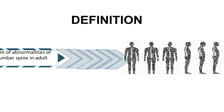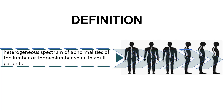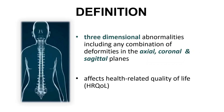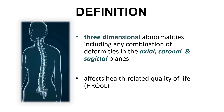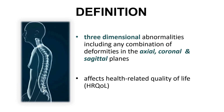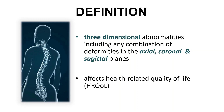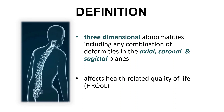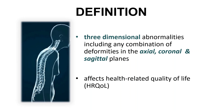Adult spinal deformity is one of the most challenging spinal disorders and by definition describes a heterogeneous spectrum of abnormalities in the lumbar and thoracolumbar spine that present in adulthood. It is characterized by three-dimensional abnormalities that can include any combination of deformities affecting the axial, coronal, and sagittal planes, exerting significant impacts on health-related quality of life.